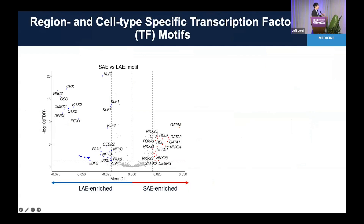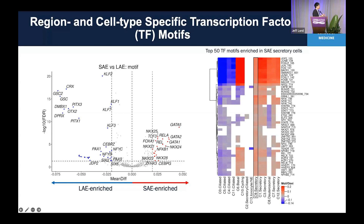Now we look at what transcription factors are different between large and small airways. These are small airway-enriched transcription factors and these are large airway-enriched transcription factors. Small airway-enriched transcription factors include GATA families and NKX families, which are known to be very important for alveolar specification during lung development. We further looked at the top 50 transcription factors enriched in small airway secretory cells — the number nine secretory cluster. Interestingly, most enriched transcription factors in small airway secretory cells are also highly enriched in other secretory cell populations.